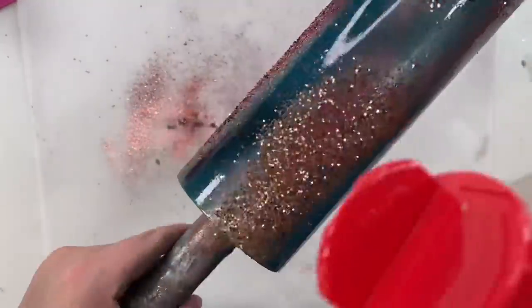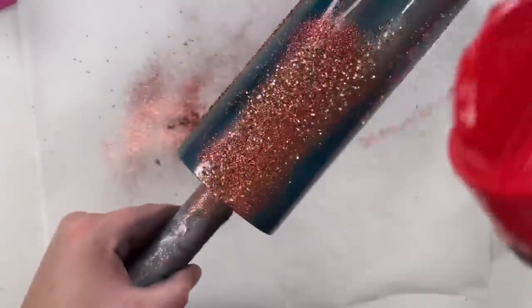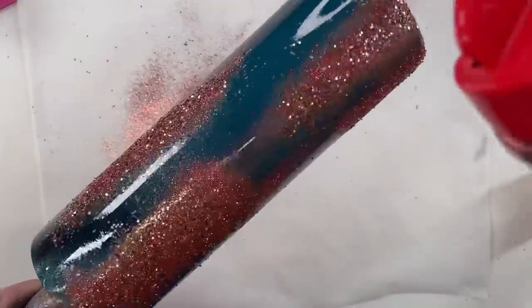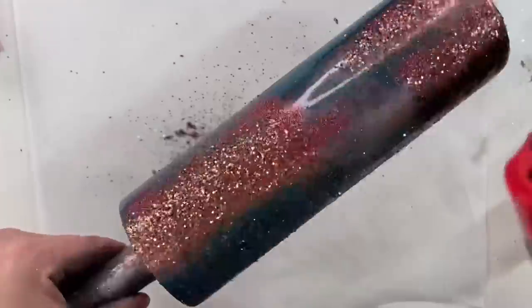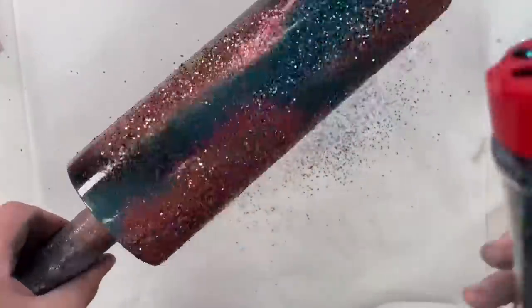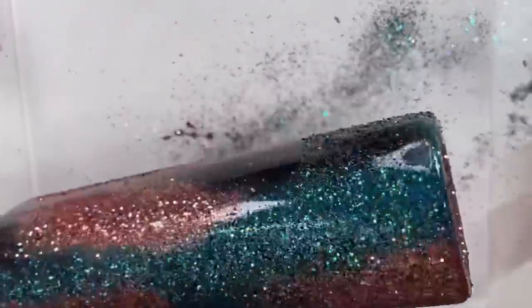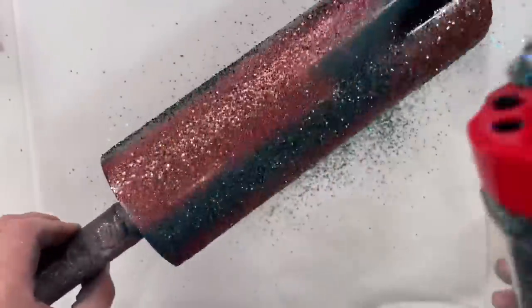So after I apply the Kooks with very light coverage, I'm going to go over it with Denmark. Denmark is a finer cut, and I'm just going to kind of sprinkle it throughout Kooks to add some dimension and help me blend later on.